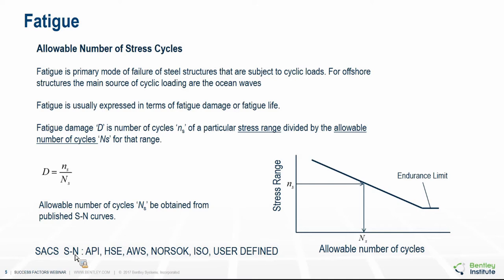To calculate fatigue damage for a particular stress range, the allowable number of stress cycles can be obtained from any published SN curve. The limiting stress range below which no damage can occur is known as the endurance limit. For offshore structures, SACS has a whole array of SN curves available, including those from API, Health and Safety Executive, American Welding Society, NORSOK, and ISO. Users can also define or input their own SN curves.